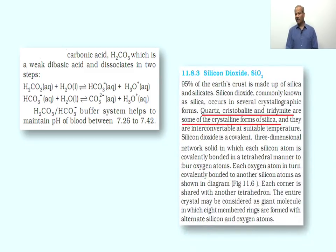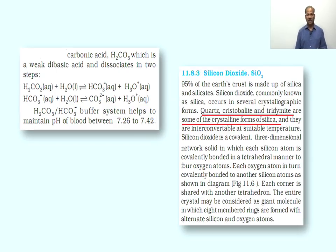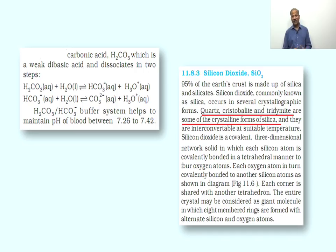An important member of Group 14 is silicon and its compounds. Silicon dioxide (SiO₂) is important — 95 percent of the earth's crust is made up of silica and silicates. Silicon dioxide, commonly known as silica, is a polymorphic substance that occurs in several crystallographic forms. The important form is quartz. Other forms are cristobalite and tridymite. Quartz, cristobalite, and tridymite are three important crystalline forms of silica, and these are interconvertible at suitable temperatures.